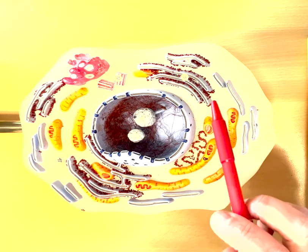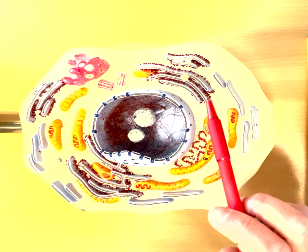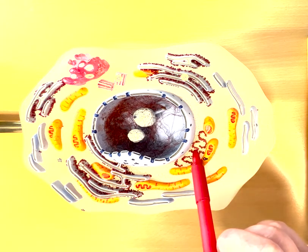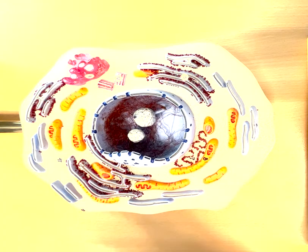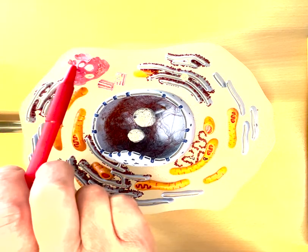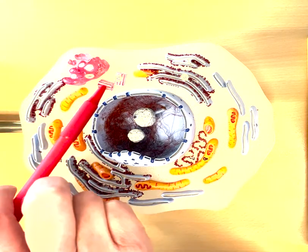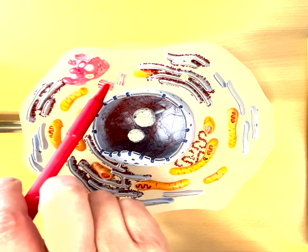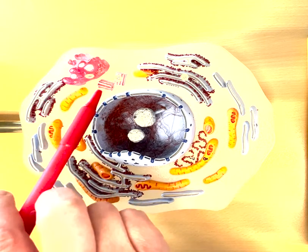These are our attached ribosomes attached onto the rough ER, smooth ER, free ribosomes, mitochondria. Over here we have the Golgi body or the Golgi apparatus. These two little guys are called centrioles. They're going to be important for animal cells and mitosis.